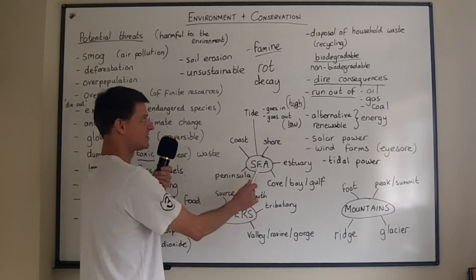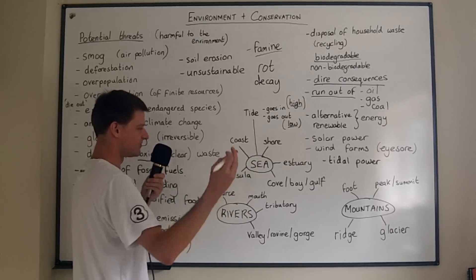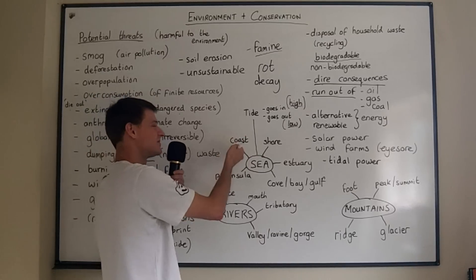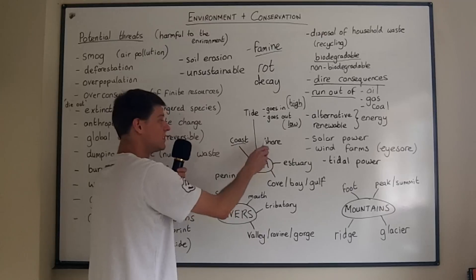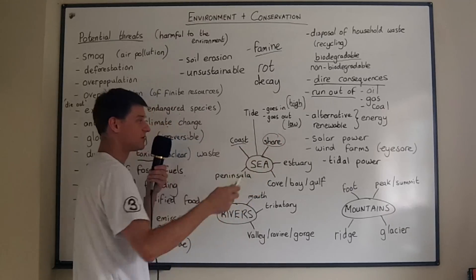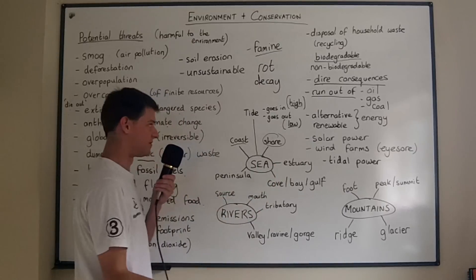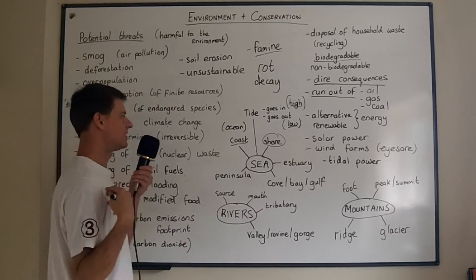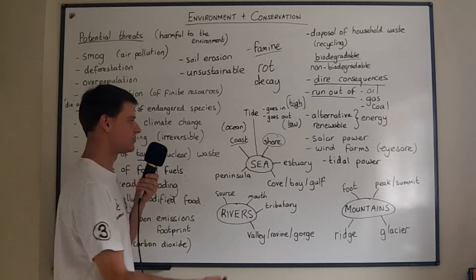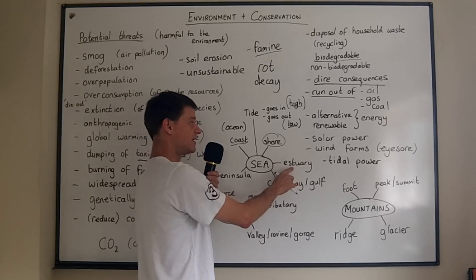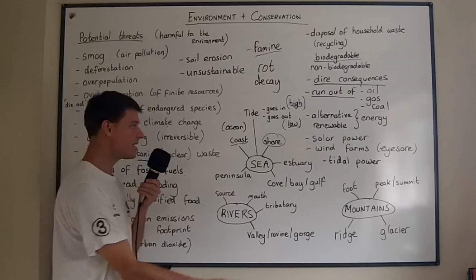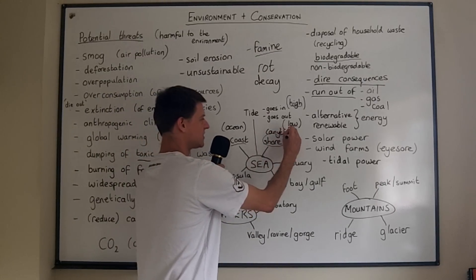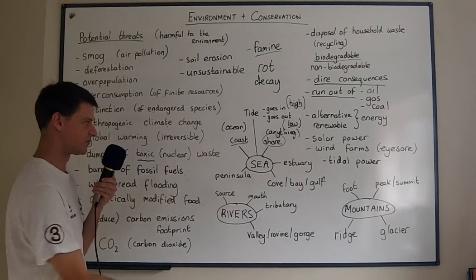Some other words related to the sea: the coast is where the land meets the ocean. The shore can even be on the side of an estuary or river, but the coast is specifically where land meets the ocean. My beach isn't really a coast because it's on the estuary of the River Thames. Estuary means the mouth of a river.